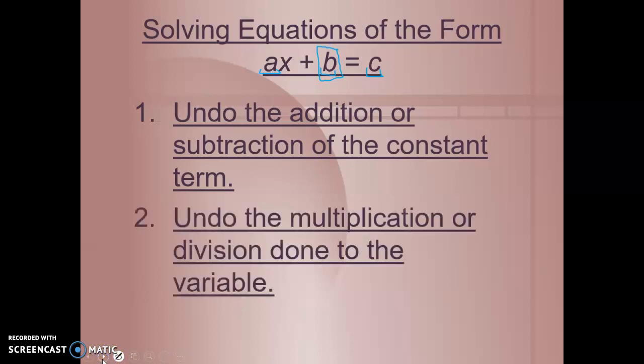Then we'll undo the multiplication or division done with the variable. And whatever coefficient is here, if it's being multiplied, we'll divide by it. And if it's being divided by, we'll multiply it. We'll use inverse operations to get the variable alone.